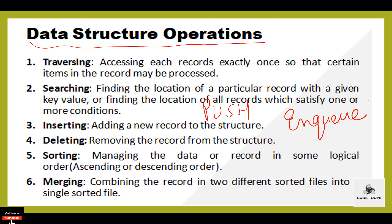Next is deletion. Deletion means to delete any element in the given data structure. The operation is successful when the required element is deleted. Deletion has the same name in data structures like array, linked list, graph, and tree, but in stack this operation is known as pop, and in queue this operation is known as dequeue.